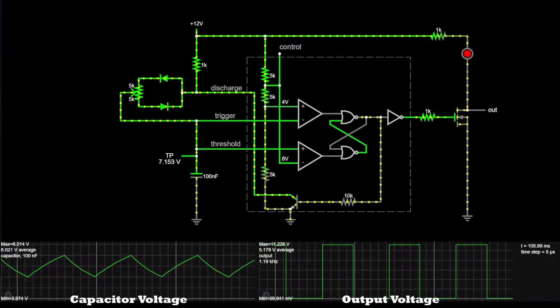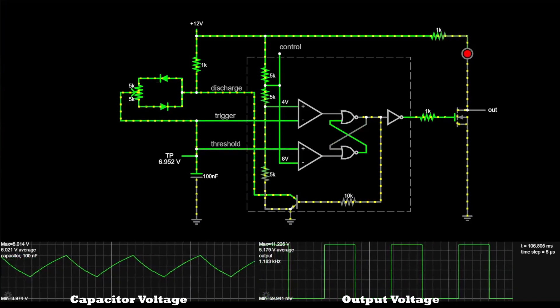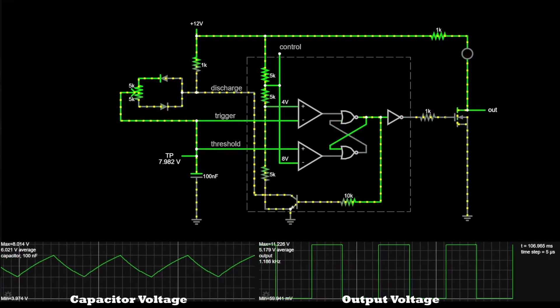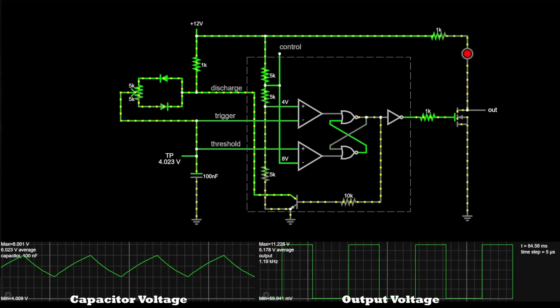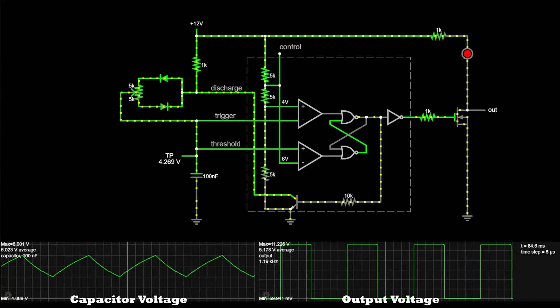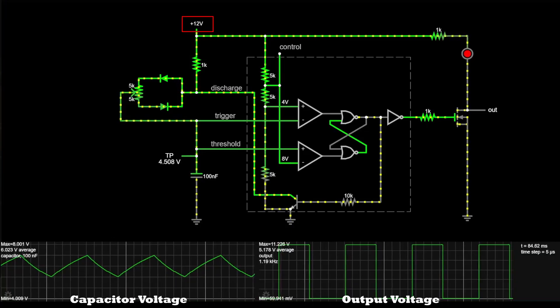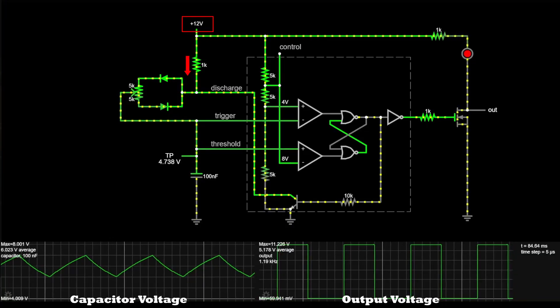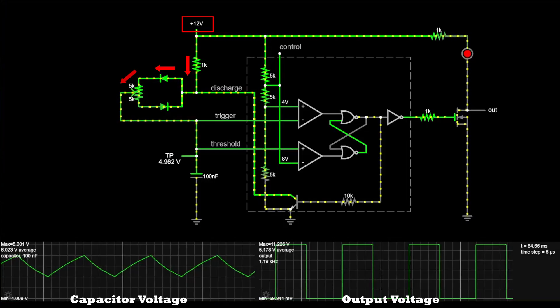Now to better understand the circuit, I will slow down the animation further so that we can see more easily the changes in states. When the output is active, the capacitor is charging from the 12V supply, through the 1k resistor, through the top diode, then through the potentiometer.